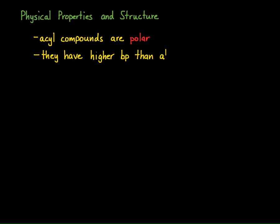They typically have higher boiling points than alkanes because of this polarity. If we think about all the different types of derivatives — obviously this is acetic acid, CH3C double bond O-OH — we've already seen the boiling point of acetic acid is about 118 degrees. Now if you compare this to other acyl compounds, we're going to see that although they vary, they're all fairly high in their boiling points.